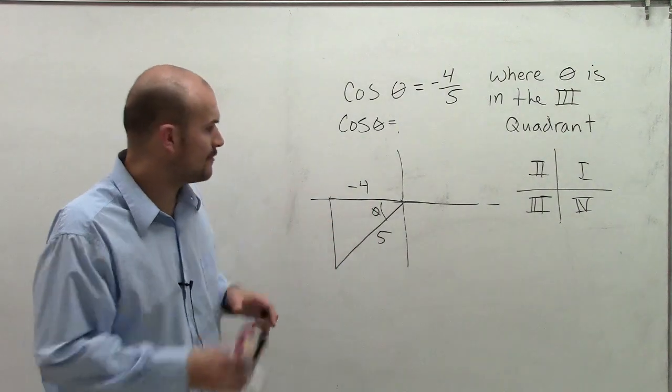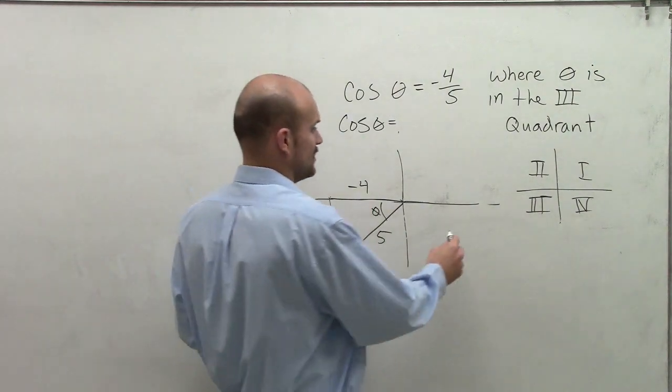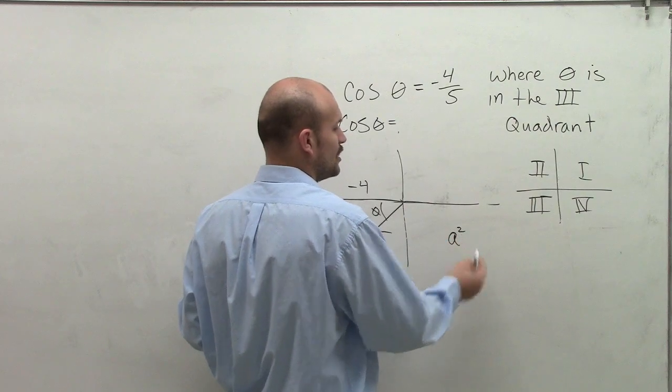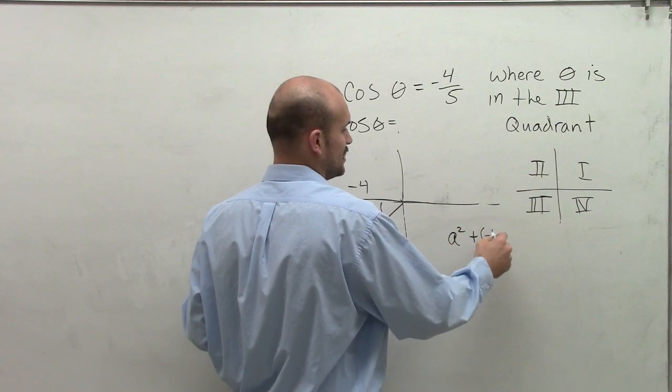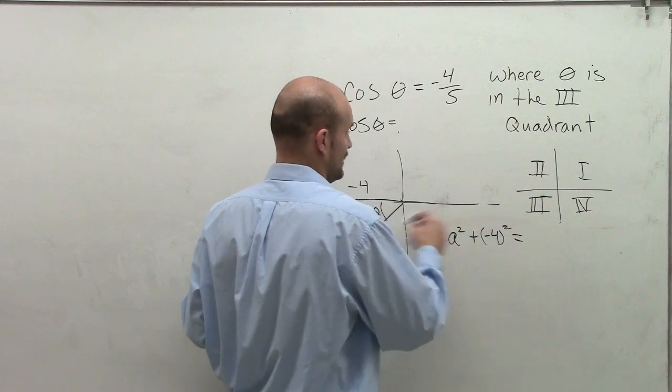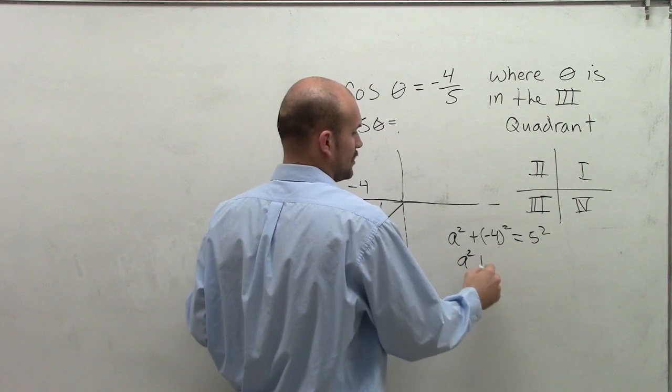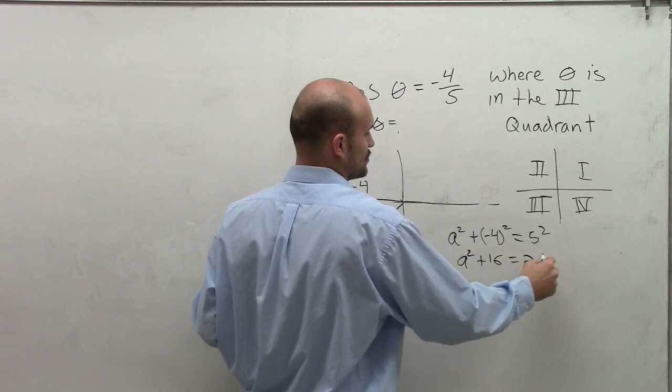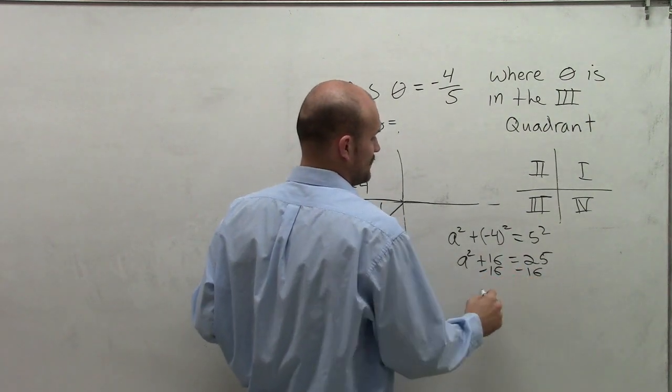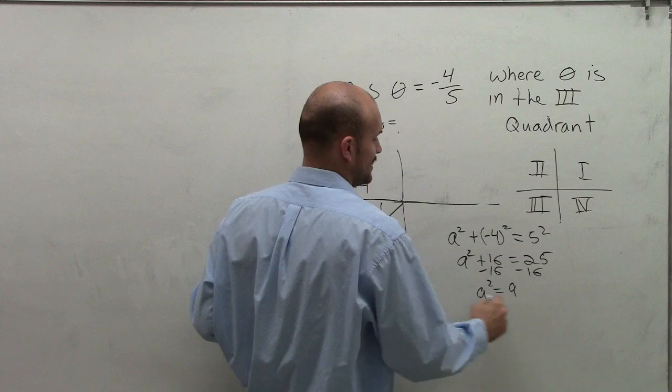So to evaluate for my y value, I have to use Pythagorean theorem, which remember states your leg squared plus the other leg squared equals your hypotenuse squared. So therefore, we have a squared plus 16 equals 25.